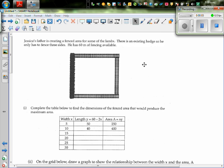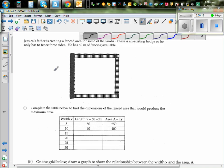Jessica's father is creating a fenced area for some of the lambs. There is an existing hedge, so only has to fence three sides. He has 60 meters of fencing available. So this is the hedge. And this is where the fencing happens, these three. So the total length of the fence or fencing that he has is 60 meters.